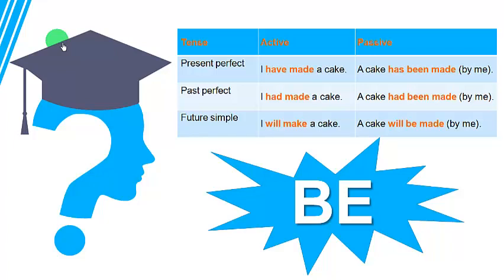Very well. So with will, would, can, could, shall, should, may, and might — all the modal verbs — you can just put the modal verb as it is, plus verb 'to be', and you will have the passive voice.